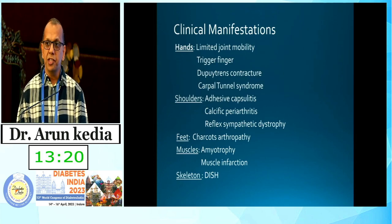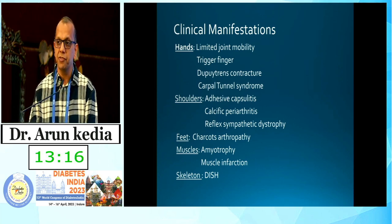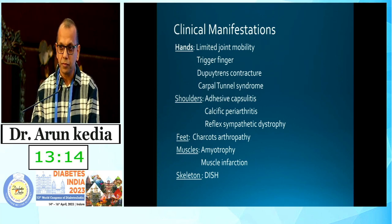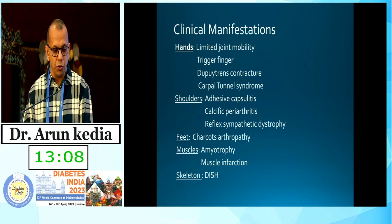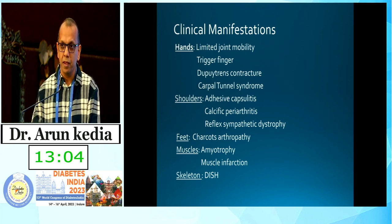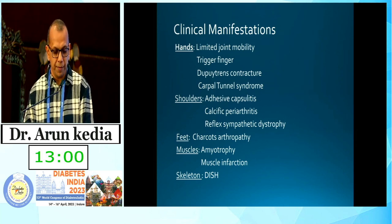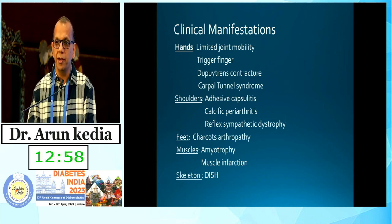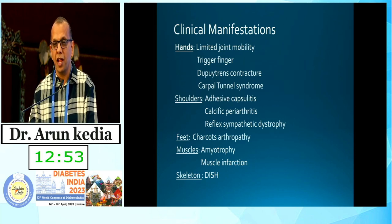In a nutshell, the musculoskeletal manifestations include: in the hands, limited joint mobility, trigger finger, Dupuytren's contracture, and carpal tunnel syndrome. At the shoulder, we get adhesive capsulitis and reflex sympathetic dystrophy. For the foot, apart from diabetic foot, we have Charcot's arthropathy. At the level of muscles, diabetic amyotrophy and muscle infarction. And at the skeletal system, we have DISH and osteoporosis.